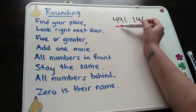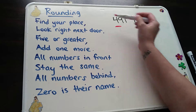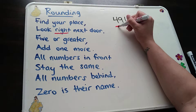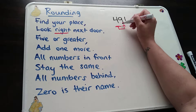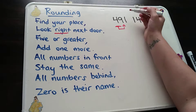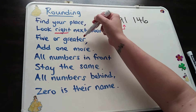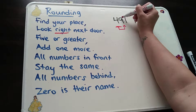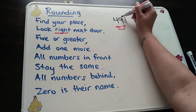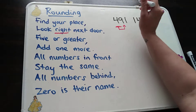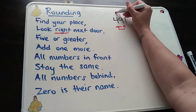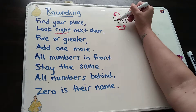So find your place — I'm rounding to the nearest 100,000, there it is. Look right next door, and that's there on purpose because I'm actually looking to the right to the number that's next door to it. It's a nine. Five or greater, add one more. So I ask myself, is the number to the right actually five or greater? Yes, it is. And if that's the case, I have to add one more — but I add one more to the number I was originally working with, at that original place value where I'm rounding.